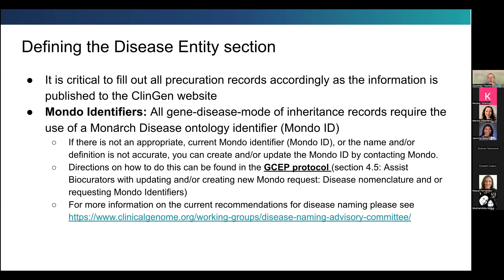Remember that we use MONDO identifiers. All gene disease mode of inheritance records — which we call a GDM — require the use of the Monarch Disease Ontology identifier. We understand there may not always be an accurate one available, and there are directions on how to contact MONDO. You can create and update identifiers. Directions are provided in the SOP and in the GSEP protocol, specifically Section 4.5, for contacting MONDO to update or create new IDs. You need that final MONDO ID in both the gene tracker and the GCI to create and publish the record. There is a free text section that is just a placeholder while you wait for a MONDO ID — you cannot use it to publish to the website.